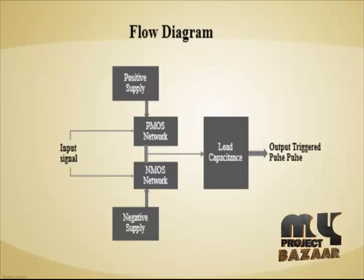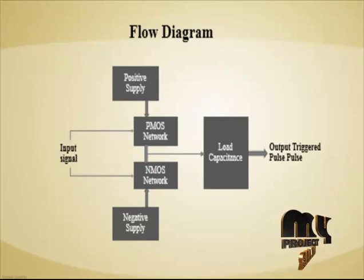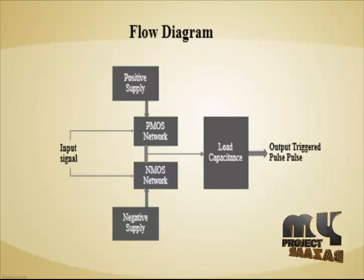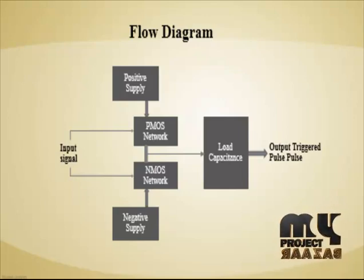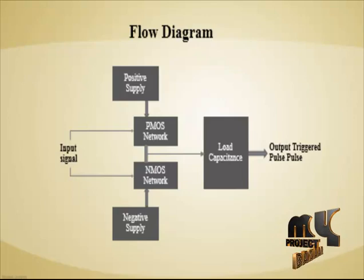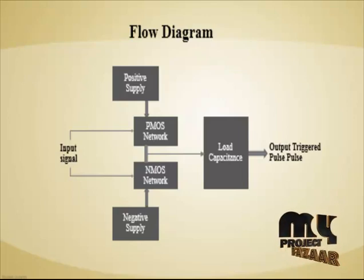The Schmitt trigger circuit is made by the combination of P-MOS and N-MOS devices. Three transistors are P-MOS devices and another three transistors are N-MOS devices. They are split into the P-MOS network and the N-MOS network. The positive supply voltage is applied to the P-MOS network, and the ground or negative supply voltage is applied directly to the N-MOS network. The final output comes from the combination of P-MOS and N-MOS networks with a load capacitance, which acts as a filter to reduce noise in the output triggered pulse.